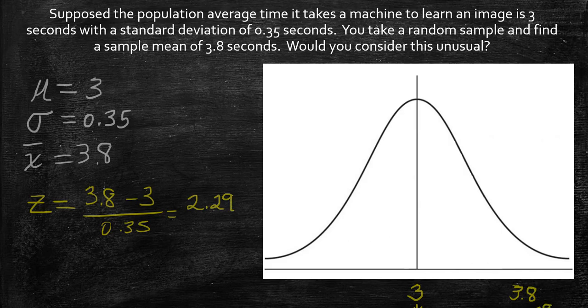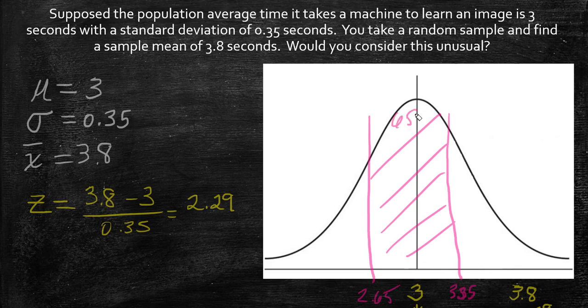Let's talk about the empirical rule. If you are one standard deviation above the mean, that would be 3 plus 0.35, or 3.35. Below would be 3 minus 0.35, which is 2.65. We would expect 68% of the data to be within there. Well, 3.8 is further out.